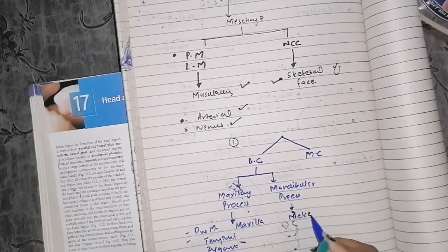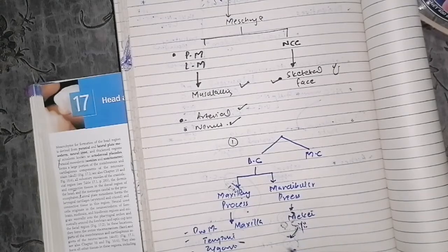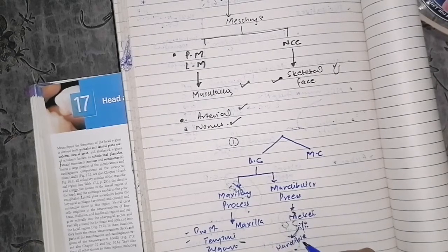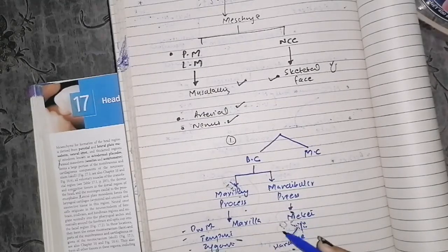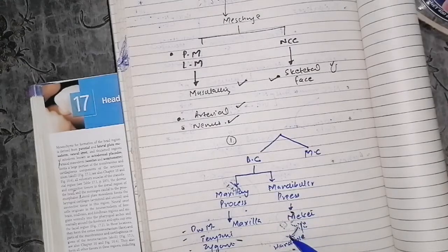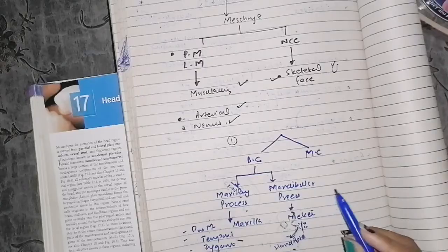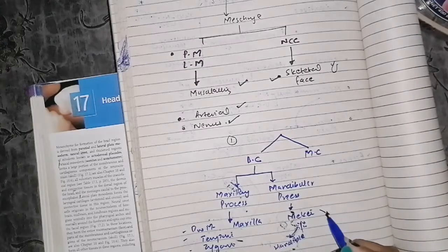Now regarding the mandibular process — it has Meckel's cartilage. The mesenchyme surrounding Meckel's cartilage forms the mandible via intramembranous ossification. So the main bones of the facial skeleton — mandible, maxilla, zygomatic, and temporal — are formed. Meckel's cartilage mostly disappears.